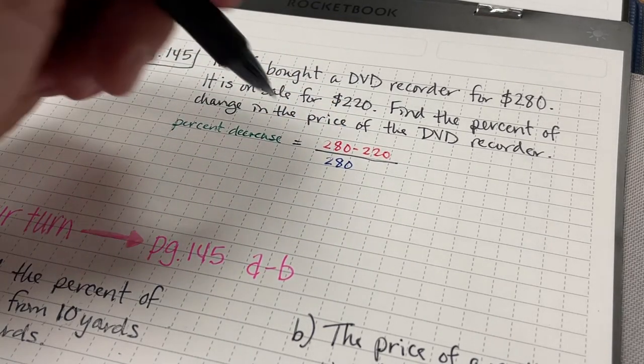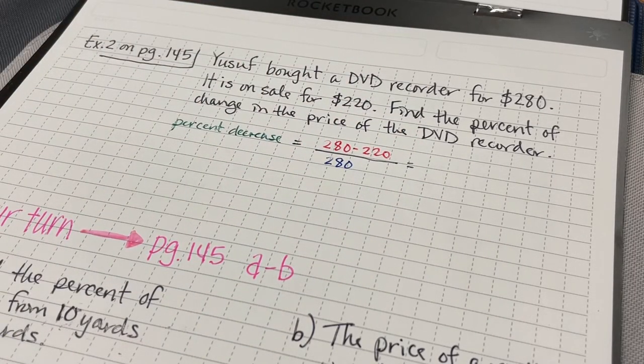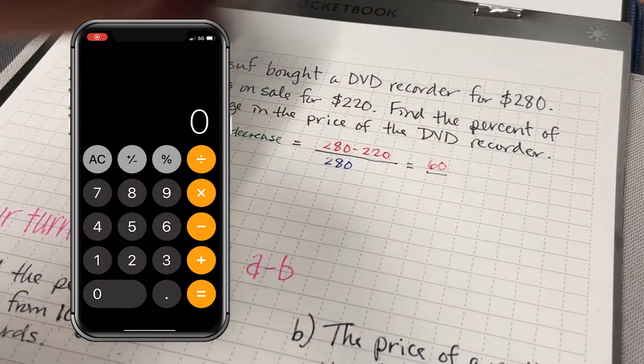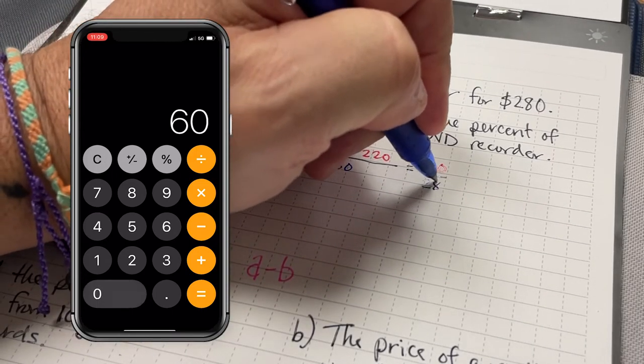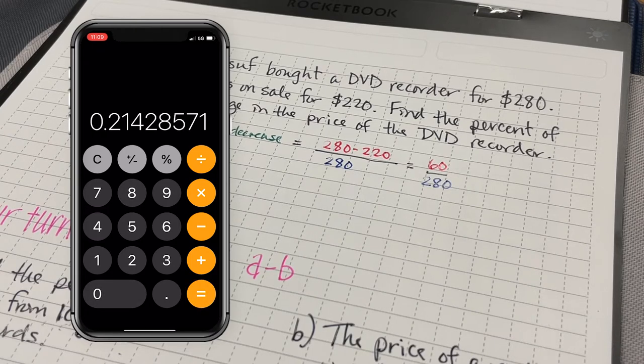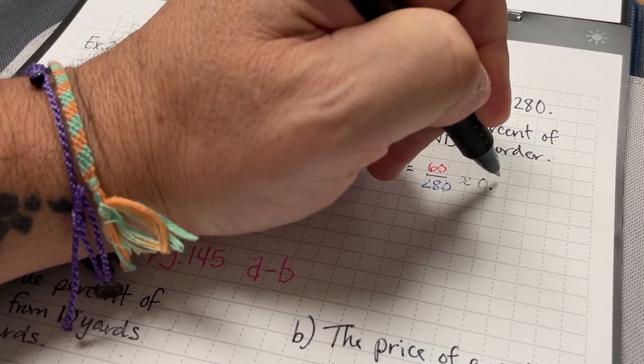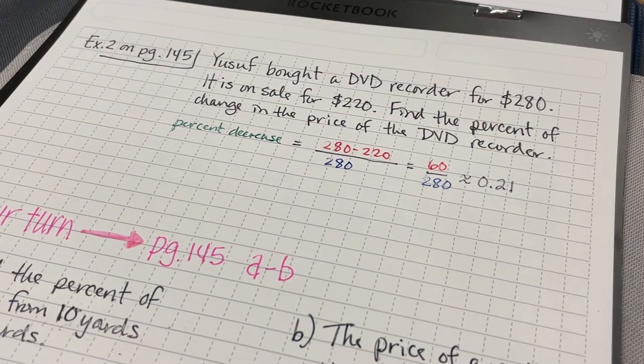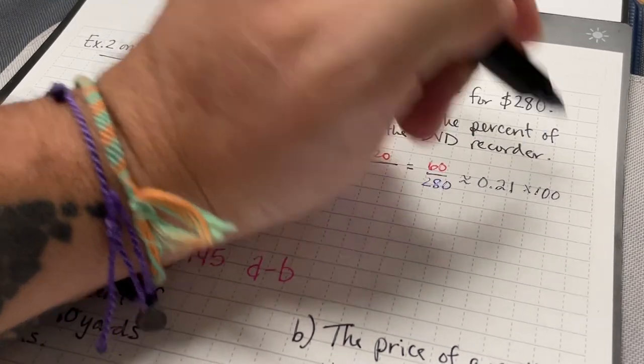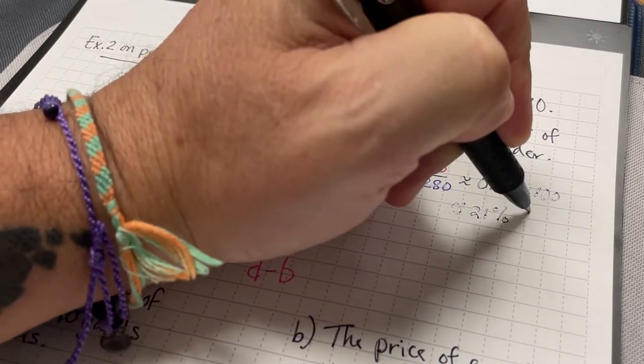And that's going to be $280 minus $220 is going to be $60 divided by $280. And $60 divided by $280 is about 0.21, and I'm just going to keep it rounding it to the nearest tenth. To turn this into a percent, I multiply that by 100, and I get about a 21% decrease.